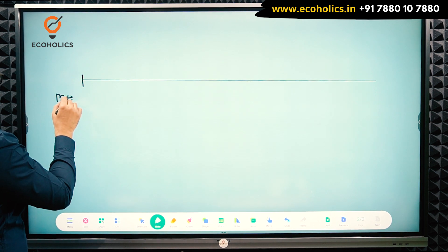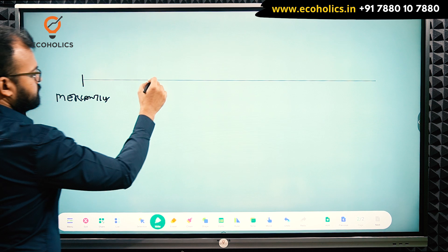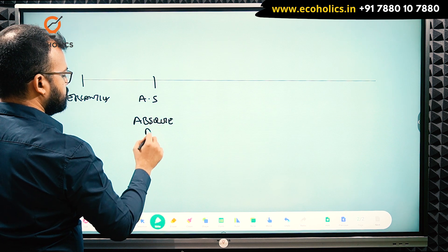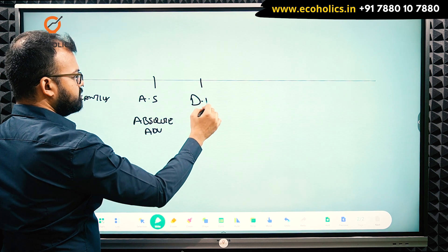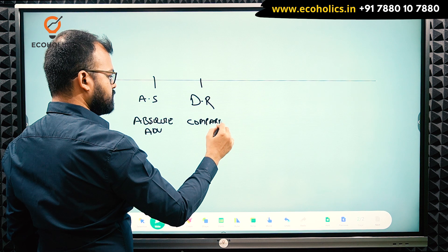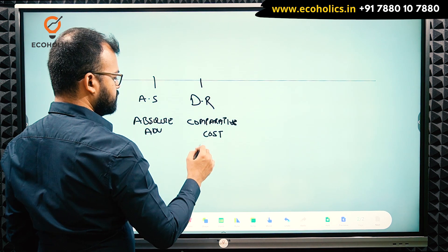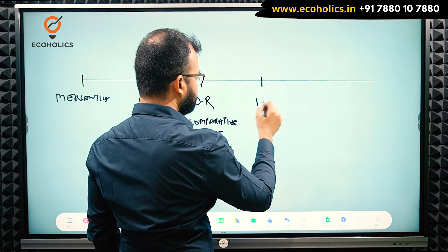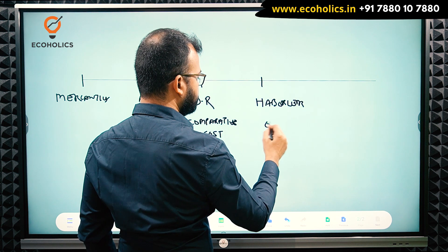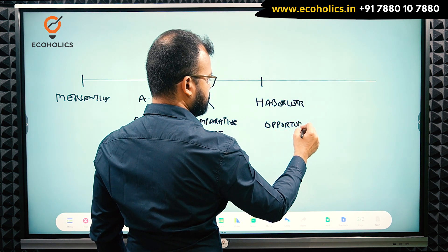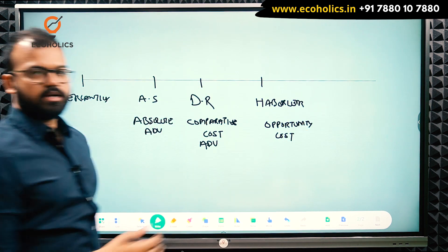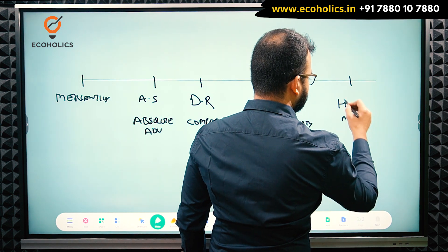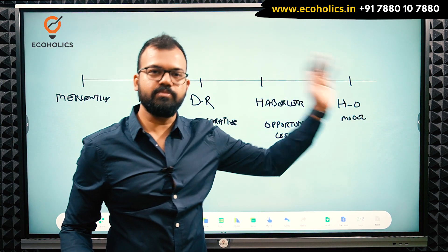Suppose international trade starts with mercantilism. Then Adam Smith gave his absolute advantage theory. Then David Ricardo gave his comparative cost advantage theory, which is still unchallenged in modern times. After that, Gottfried Haberler gave the opportunity cost theory. And after that, we have the HO model. In coming videos, we will continue this series from HO model to Samuelson, Rybczynski, etc.